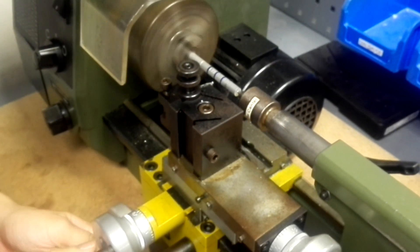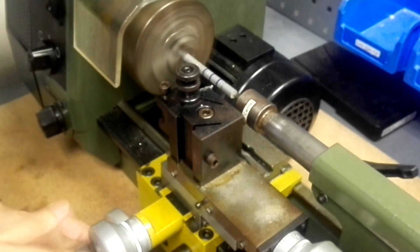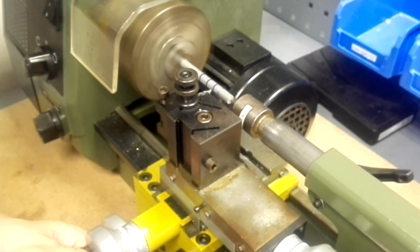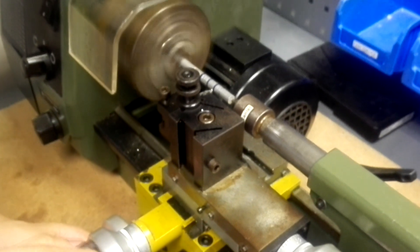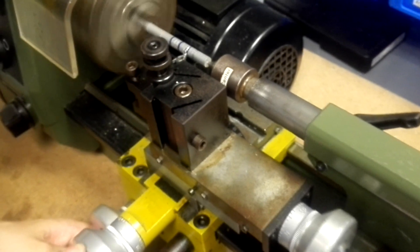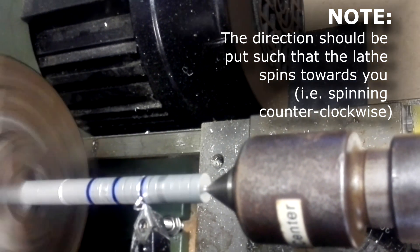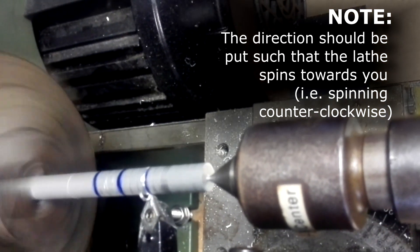Adjust the blade using the hand wheels and bring the blade close enough to make the cut. When cutting, you should be able to see some of the material coming off the workpiece.